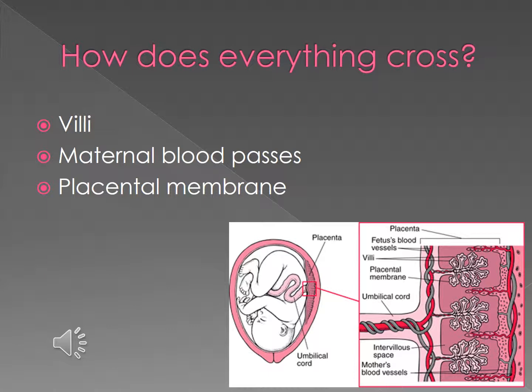Some of the fetus's blood vessels are contained in tiny hair-like projections called villi of the placenta that extend into the wall of the uterus. The mother's blood passes through the space surrounding the villi, called the intravillus space. Only a thin membrane, the placental membrane, separates the mother's blood in the intravillus space from the fetus's blood in the villi.